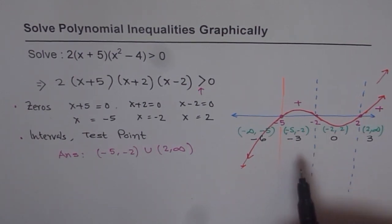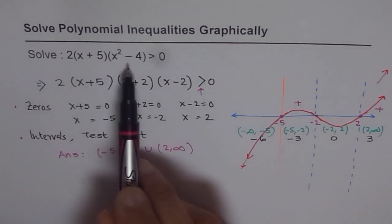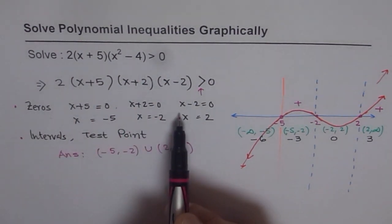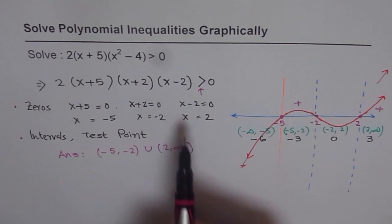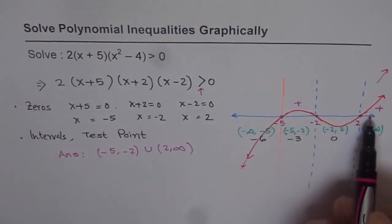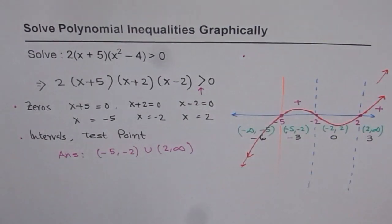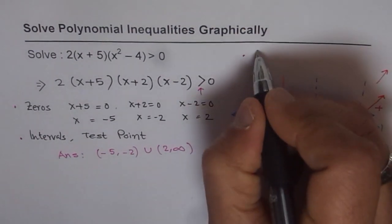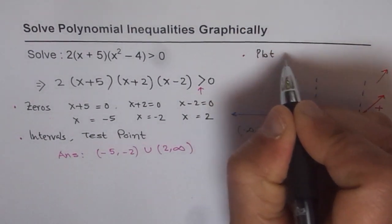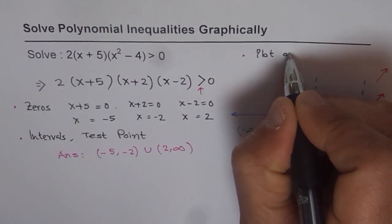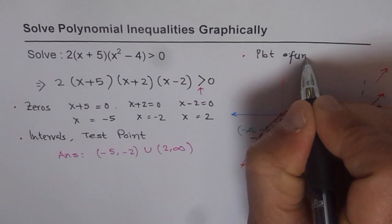So let's recap. How to do these kinds of questions graphically? Steps involved are, when you are given equation in factored form, write down your zeros. That is the first step. Second step is, plot the function on the number line. So that is, I should say, step number 2 is, plot or graph function. Graph your function.